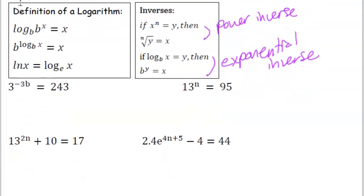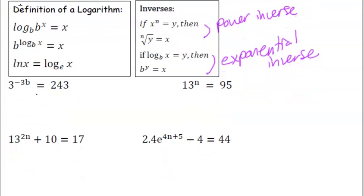Let's solve this first example. 3 to the negative 3b power is equal to 243. Let's log base 3 each side. That gets rid of the base and so we have negative 3b equals log base 3 of 243. Well, 3 to some power equals 243 exactly.